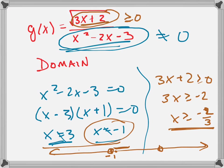This really doesn't even matter because negative 1 is less than negative 2 thirds. So it's got to go from here all the way there but not include negative 1 or positive 3.